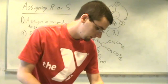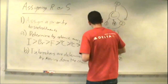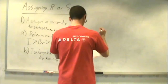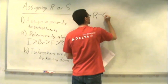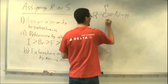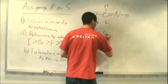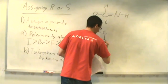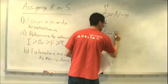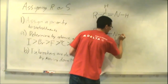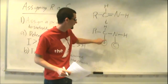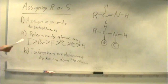For double bonds, you actually count the atoms twice. So if you were moving to a doubly bonded nitrogen, for example, you would consider it to have two nitrogens attached to it, and that's how you determine the priority of each of your groups.